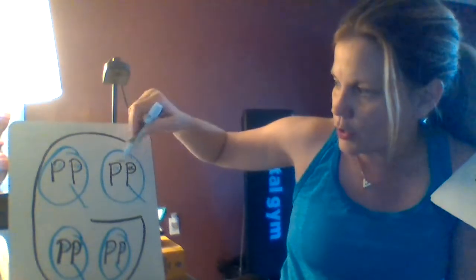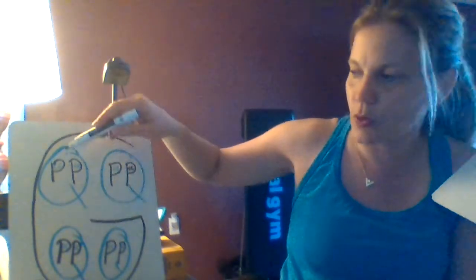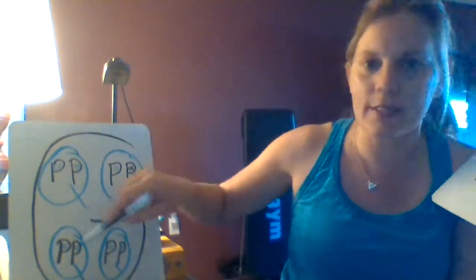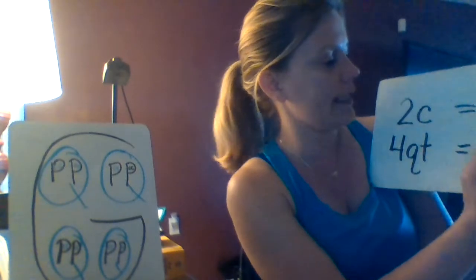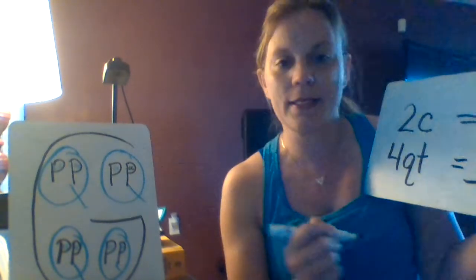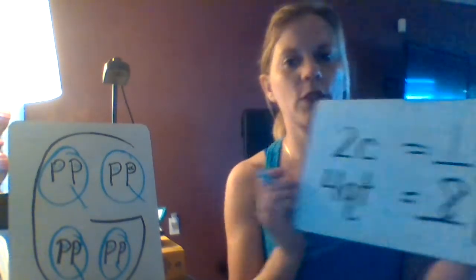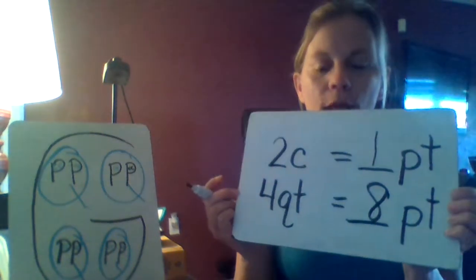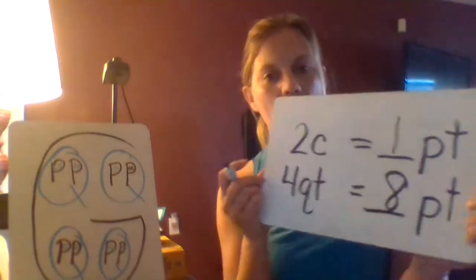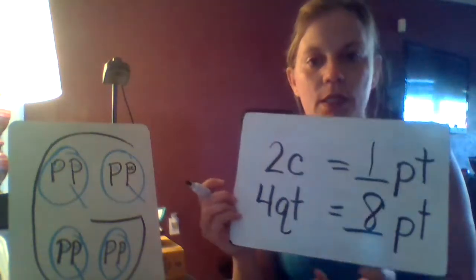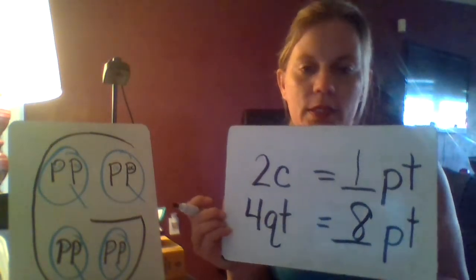Now what if I go backwards? What if it says: I have four quarts — how many pints is that? I look on here, and if I have four quarts, how many P's are in all four of those? There are two in each, so two, four, six, eight — it equals eight pints. This can really help you out when you are comparing your different kinds of liquid measurements.